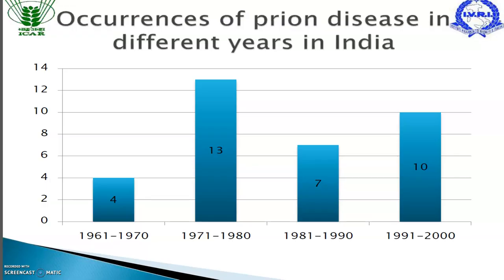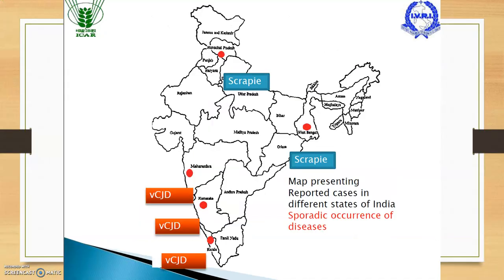Looking at the occurrence of prion disease in India across different years, it was most common in the 1971–1980 period. The main areas where prion disease occurs in India are West Bengal and the Himachal Pradesh–Haryana border, where scrapie is more prevalent.